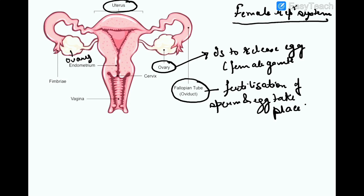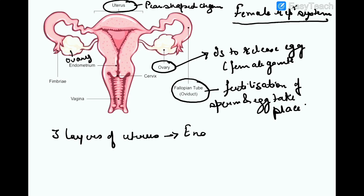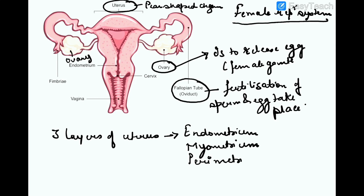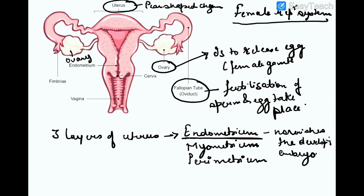The next part of the female reproductive system is the uterus, which is a pear-shaped muscular organ. The uterus has three layers: the inner one is known as endometrium, the middle one is myometrium, and the external layer is perimetrium. The endometrium nourishes the developing embryo, and the myometrium undergoes contraction during delivery of the child.